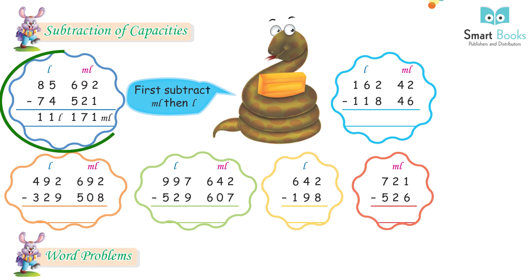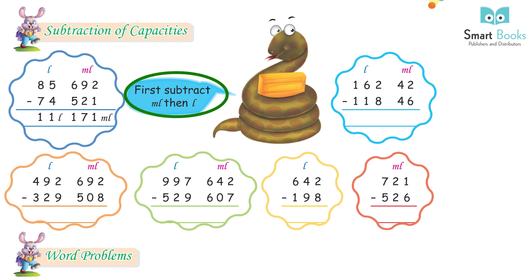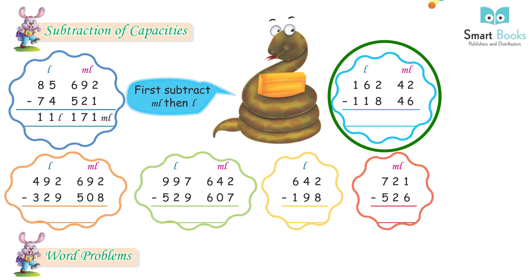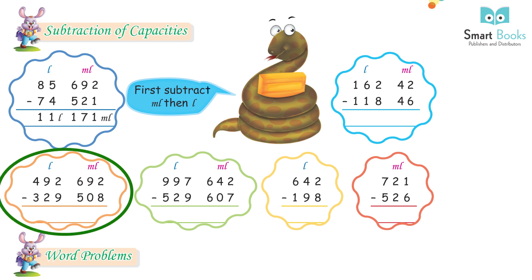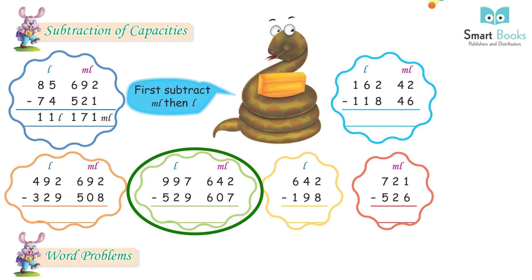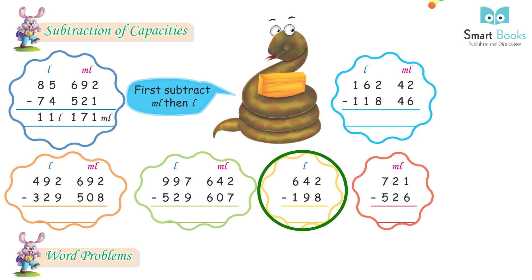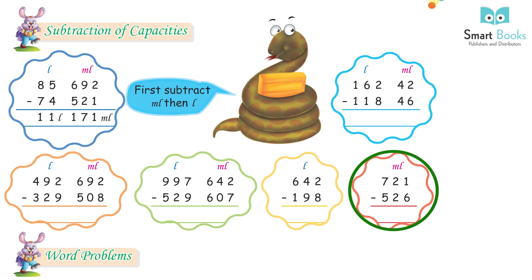Subtraction of capacities: 85 L 692 ml − 74 L 521 ml = 11 L 171 ml. First subtract milliliters, then liters. 162 L 42 ml − 118 L 46 ml = 43 L 96 ml. 492 L 692 ml − 329 L 508 ml = 163 L 184 ml. 997 L 642 ml − 529 L 607 ml = 468 L 335 ml. 642 L − 198 L = 444 L. 721 ml − 526 ml = 195 ml.